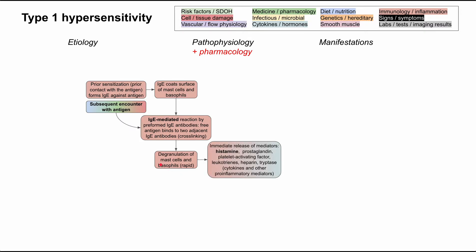When these mast cells and basophils dump their contents, you have immediate release of mediators. The most prominent is histamine, but there are many others, including prostaglandin, platelet activating factors, leukotrienes, heparin, tryptase, and other cytokines and pro-inflammatory mediators downstream. So you have a full immune allergic response.